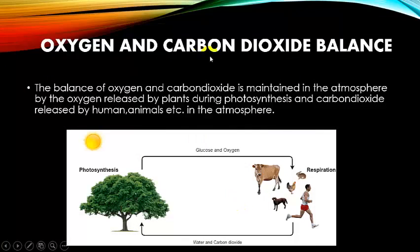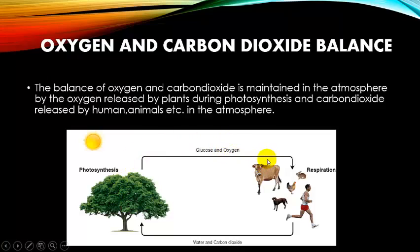The balance of oxygen and carbon dioxide is maintained in the atmosphere. As shown in the diagram, oxygen is released during photosynthesis, and carbon dioxide is released by humans and animals into the atmosphere. Plants take in carbon dioxide and release oxygen, while humans and animals take in oxygen and give out carbon dioxide. In this way, oxygen and carbon dioxide are balanced in nature.